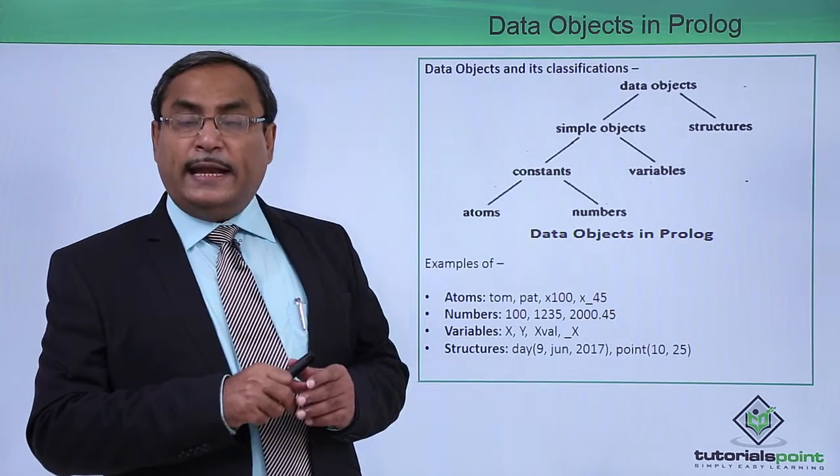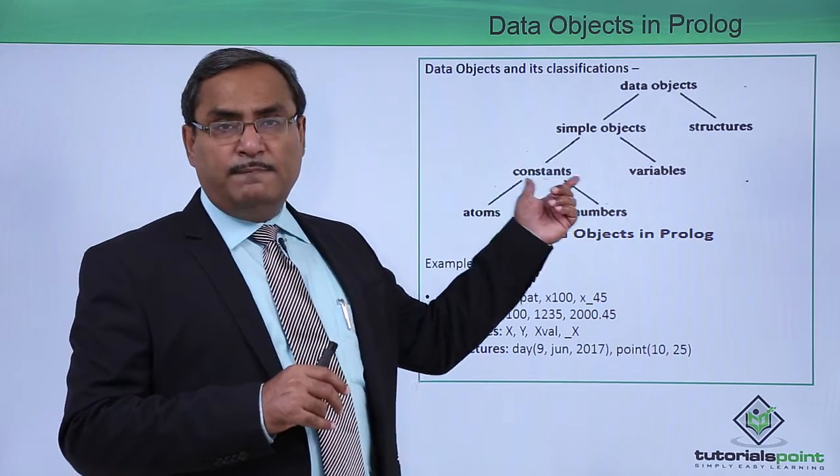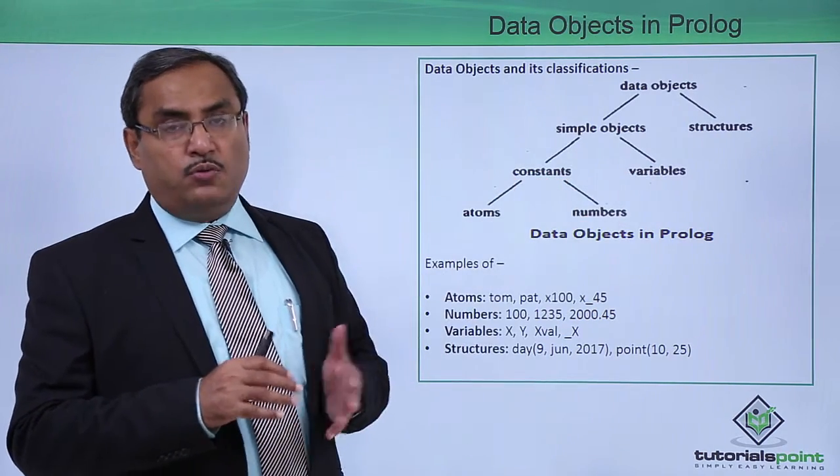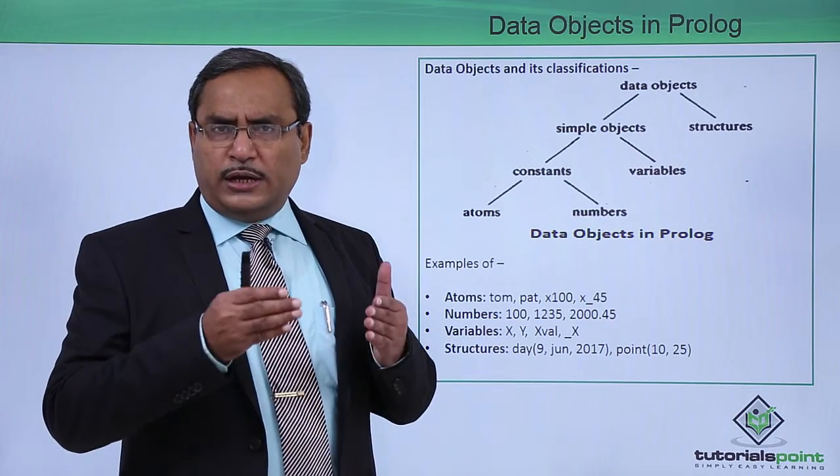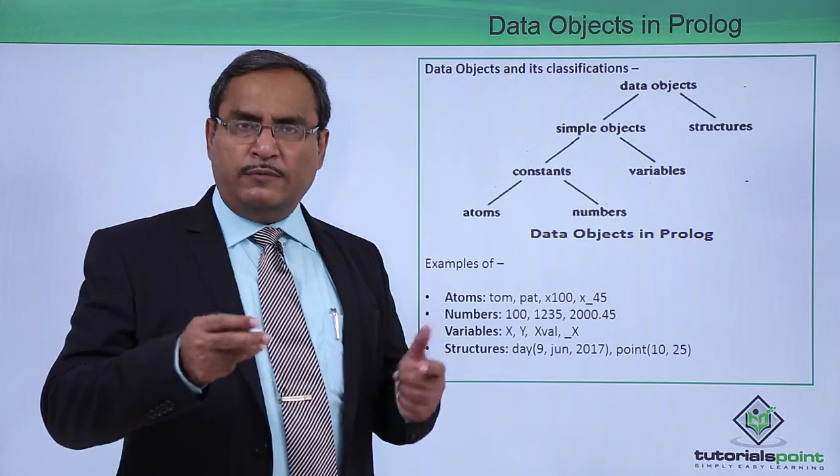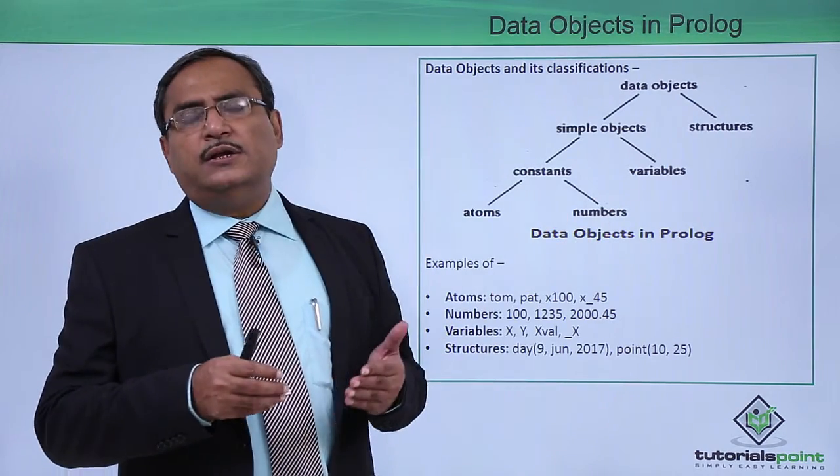Simple objects can be categorized into two heads: constants and variables. What is a variable? The variable is a symbol which can hold multiple values but one value at a time. Variables can have lowercase letters, capital letters, digits, and underscores.